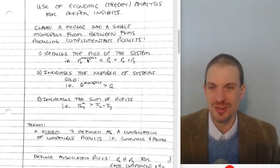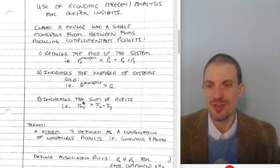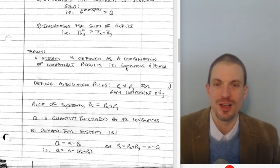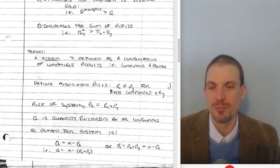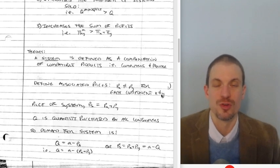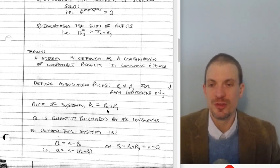Alright. So we're going to reduce the price of the system, meaning the monopoly selling the system is going to be less than the system price when you have firm X and firm Y pricing separately. It'll increase the number of systems sold. The monopoly quantity would be larger than the quantity of systems sold separately. And the sum of profits, the profits for the monopoly is going to be more than the sum of firm X and firm Y separately. So let's see this. So let's define the system as a combination of compatible products, such as computers and the monitor. And then we want to define the associated prices, PX for one part of the system, PY for the other. And these are the two components, good X and good Y, that are sold together or sold by separate sellers, but are used together. The price of the system as a whole, PS.